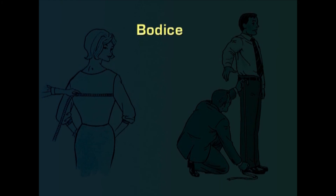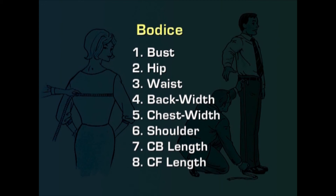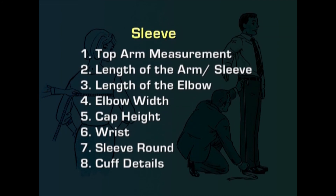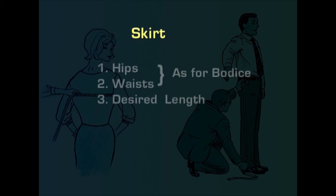Measurements required for the bodice include: bust measurement, hip measurement, waist measurement, back width measurement, chest width, shoulder, center back length, and center front length. For the sleeve, one requires: top arm measurement, length of the arm or sleeve, length to the elbow, elbow width, cap height, wrist, sleeve round, and cuff details.